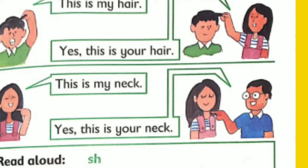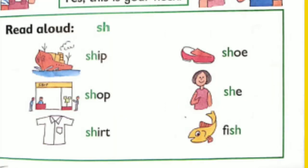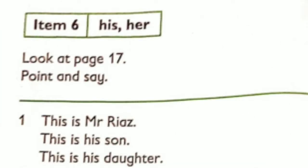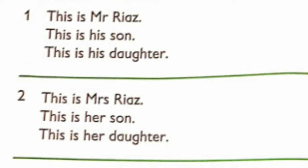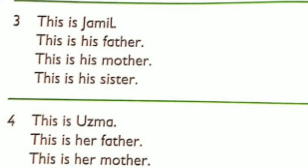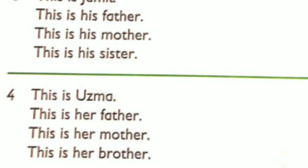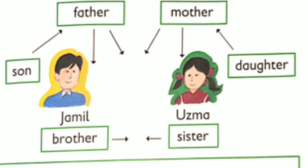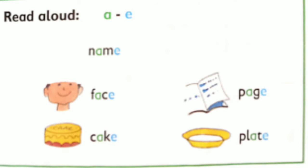Read aloud: sh — ship, shop, shirt, shoe, she, fish. Item 6 — His / Her. This is Mr. Riaz. This is his son. This is his daughter. This is Mrs. Riaz. This is her son. This is her daughter. This is Jamil. This is her mother. This is her brother. His, her. Mr. Riaz — father. Mrs. Riaz — mother. Son, Jamil, brother. Read aloud: a-e — name, face, cake, page, plate.